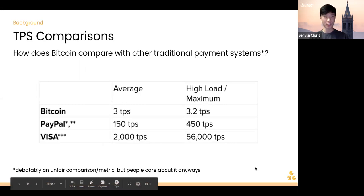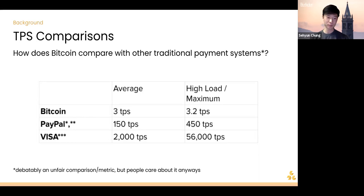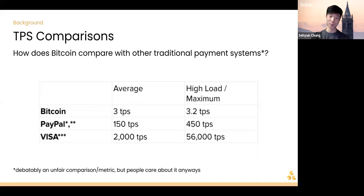Here is a table of transactions per second for different money transfer systems. Visa is up in the tens of thousands of transactions per second, PayPal is in the hundreds, and Bitcoin is last at a maximum of 3.2 transactions per second. This is arguably an unfair comparison since Bitcoin and Visa do different things under the hood, but TPS is something many end users care about, so it's still an important metric to keep in mind.